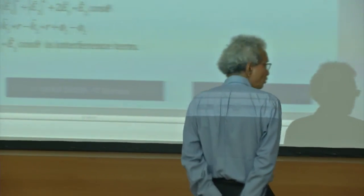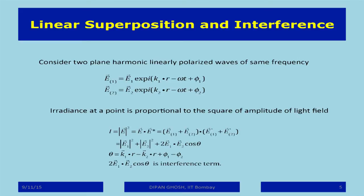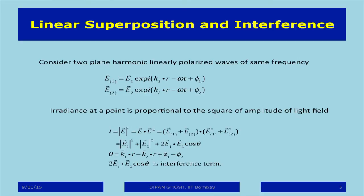The basic principle of interference and diffraction involves two plane polarized waves. The first has polarization vector E1 with its space-time part, and the second is E2 with its space-time part. To find the effect at a particular point you add the two, plus the complex conjugate. Note that E1 and E2 are vectors because they are the directions of polarization of the electric field. In Young's double slit we assume E1 is parallel to E2, so we ignore the vector character.